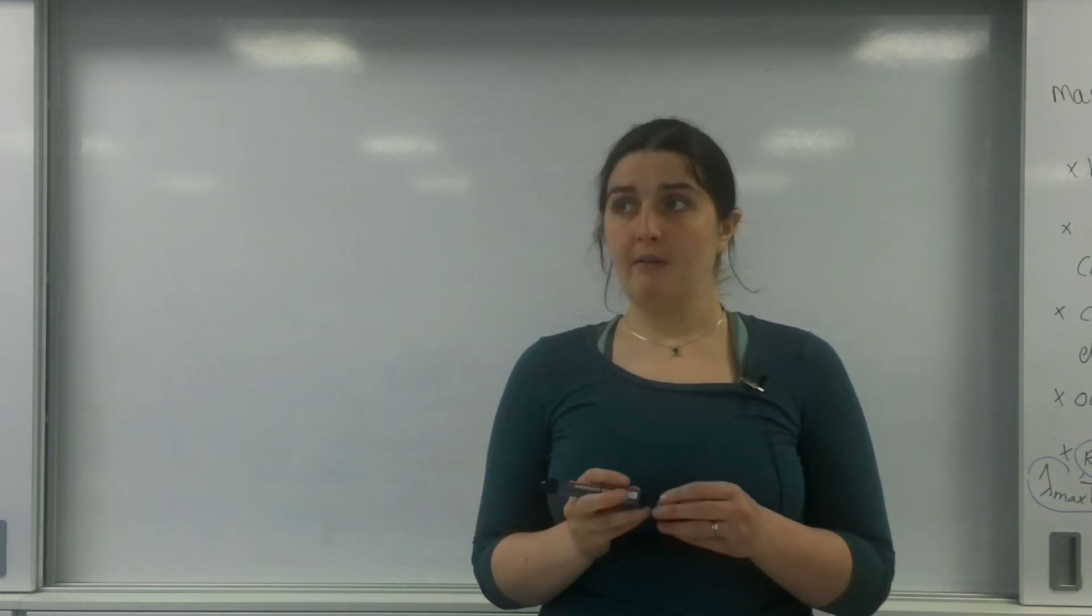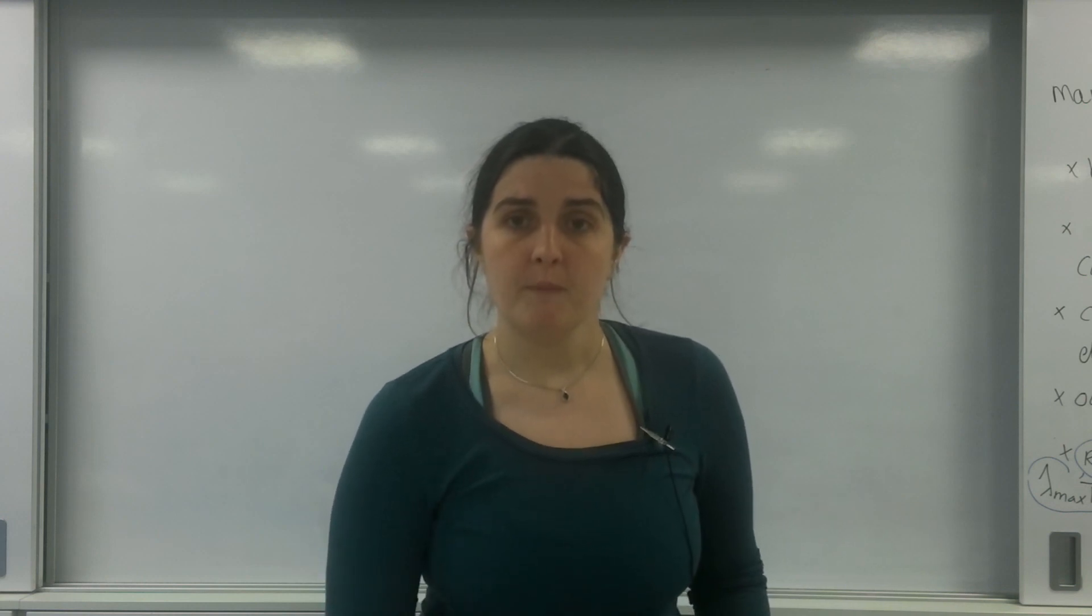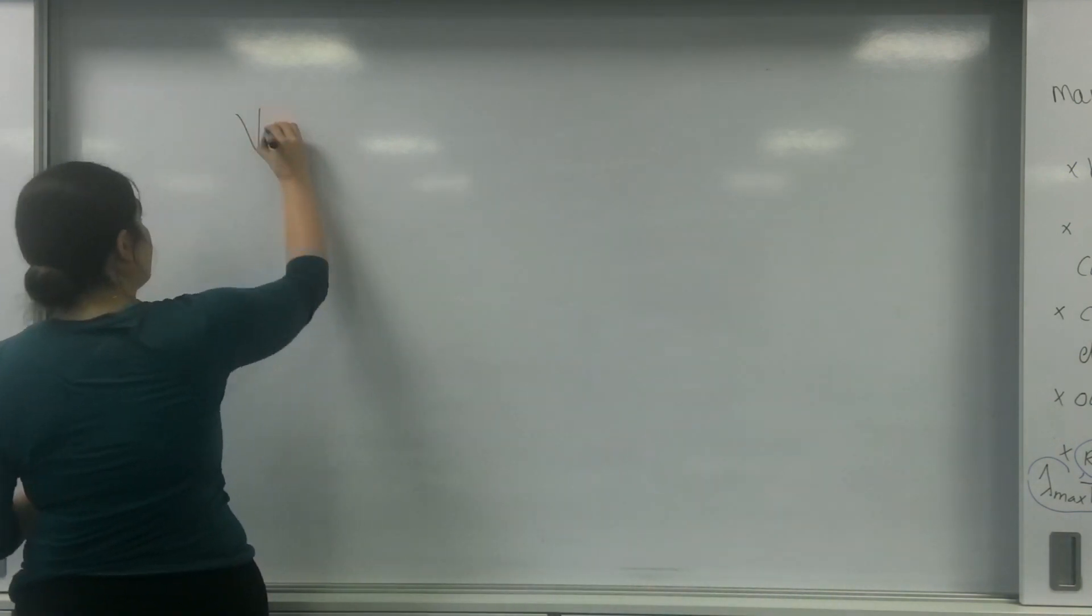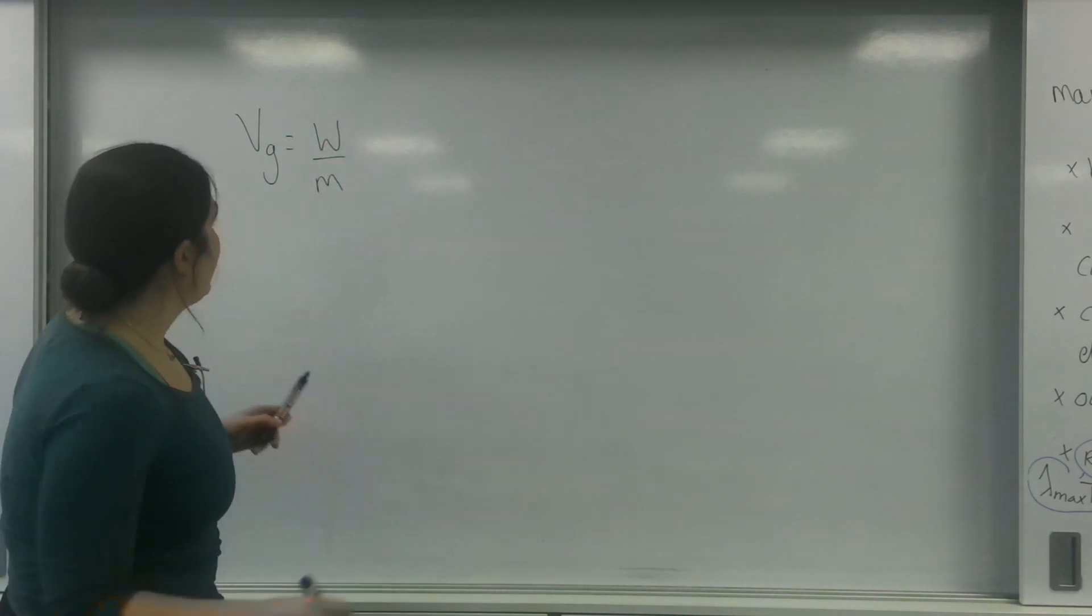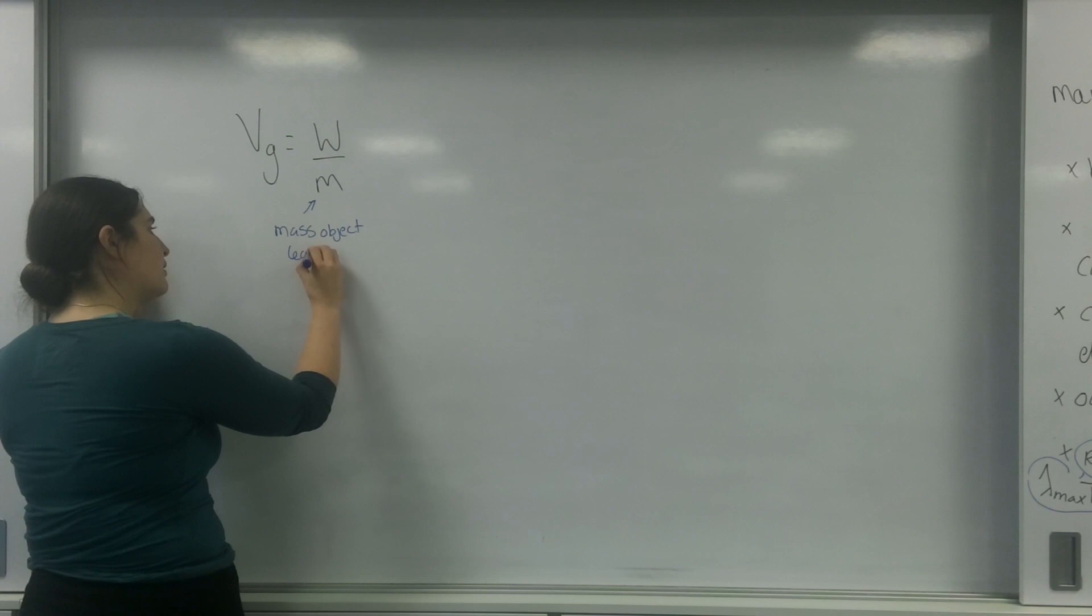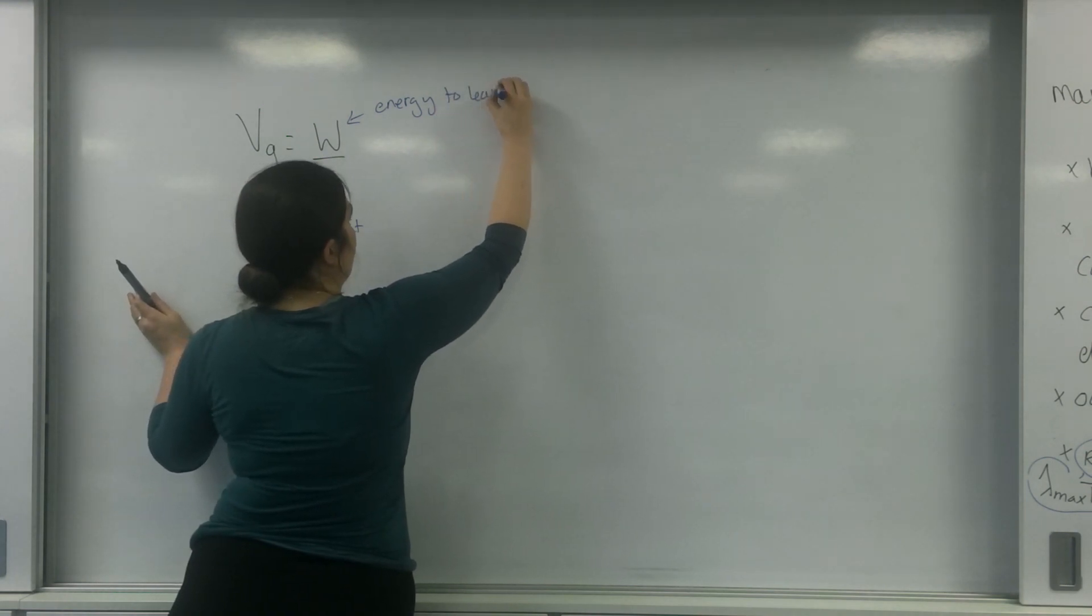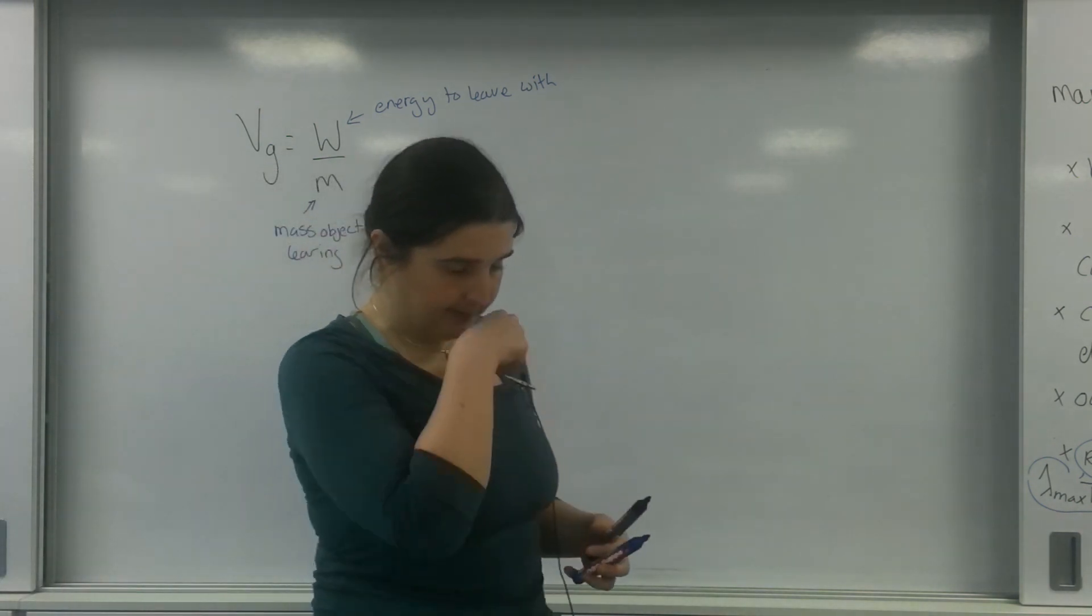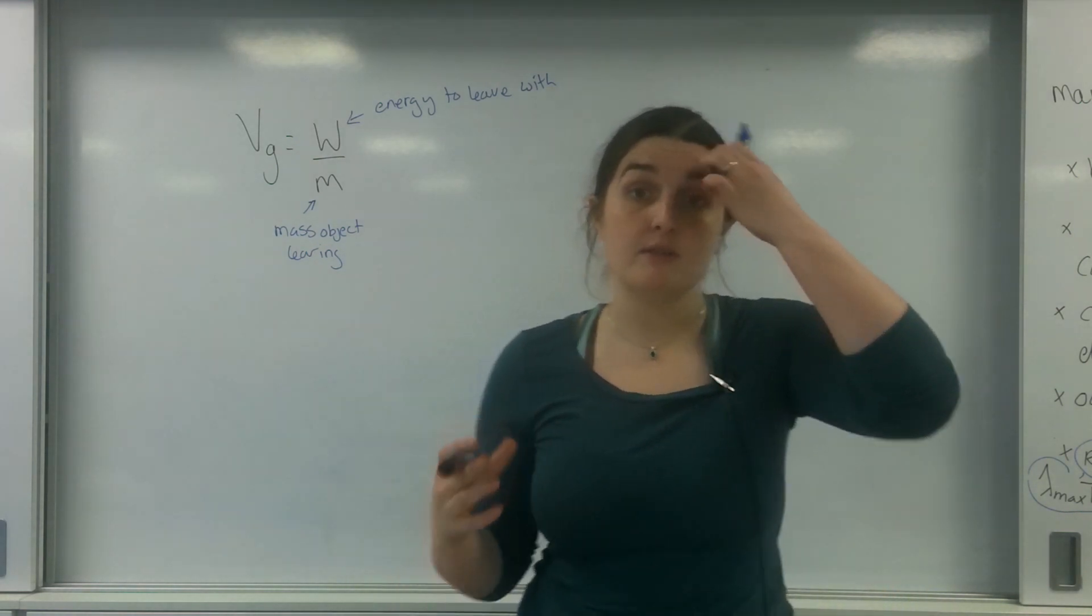If I'm trying to leave the field at the speed of light, I know I'm going to have to put in kinetic energy. So I'm going to find this point where I have a gravitational potential, which is energy over mass, where this is the mass of the object leaving. This is the energy to leave with, and this ratio is the gravitational potential of an object. I also know I can work out the gravitational potential of an object's field at a point using this formula here.